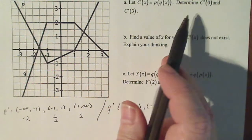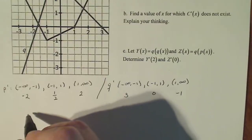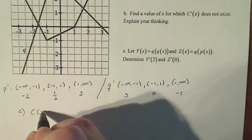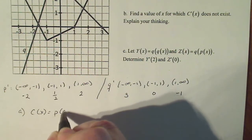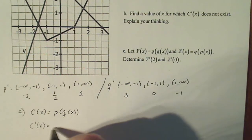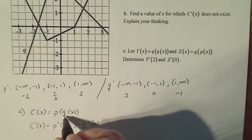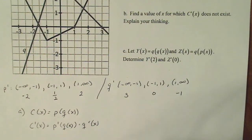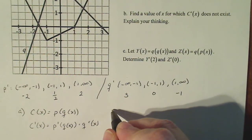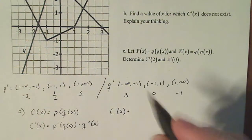Now we're going to do c of x equals p of q of x and determine the derivatives at points. Before we determine derivatives at points, I have to determine what the derivative of c at x is. C prime of x using the chain rule is p prime of q of x times q prime of x — the original q stays inside p prime.